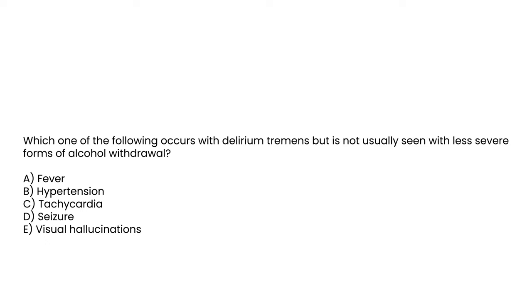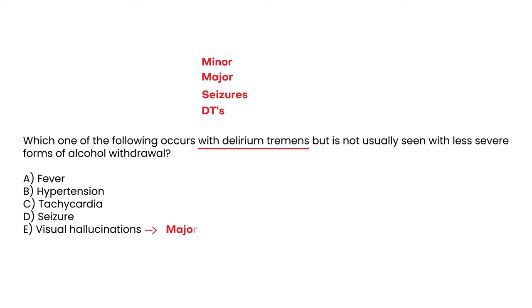Question: Which of the following occurs with delirium tremens but is not usually seen with less severe forms of alcohol withdrawal? Let's go through the options and consider whether they belong to the minor, major, seizure, or DT stage. Visual hallucinations can happen in the major stage, so that's not exclusive to DTs. What we're looking for is something that only happens in DTs.